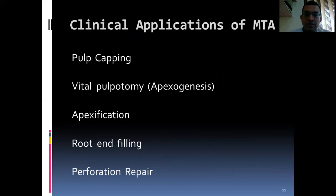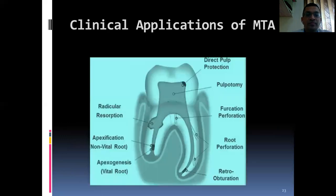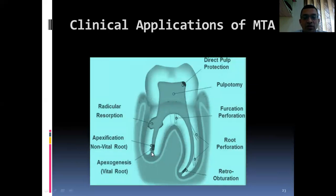Clinical applications of MTA include: pulp capping, vital pulpotomy, apexogenesis, apexification, root canal filling, and perforation repair. If inflammation is restricted to one portion, it is used for direct pulp capping. If inflammation involves the entire pulp chamber, pulpotomy is done. It is used to close perforations including root perforations, and also as a retrograde filling material. If the tooth is vital, it helps in continued root formation — apexogenesis. If the pulp becomes necrotic, it is used to form a hard tissue barrier — apexification. It is also used for resorption cases.